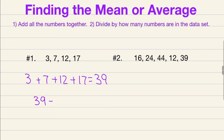You're going to divide your sum by how many numbers are in your data set. In this case we have 1, 2, 3, 4 numbers in our data set. So 39 divided by 4 gives us our mean.